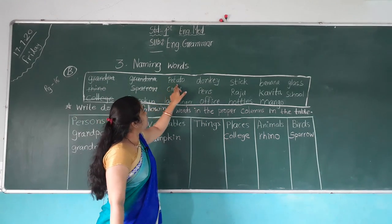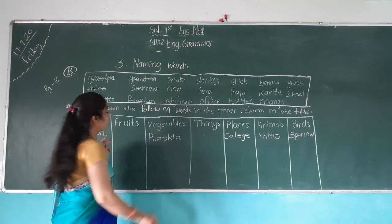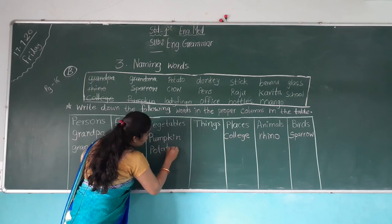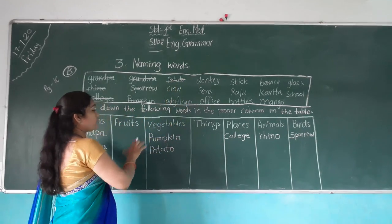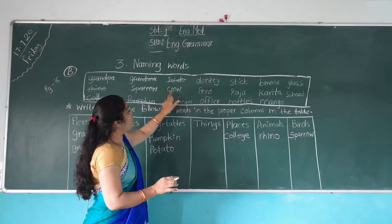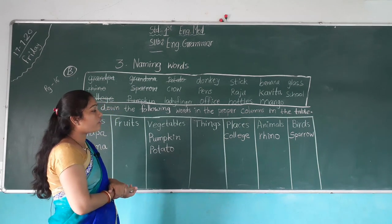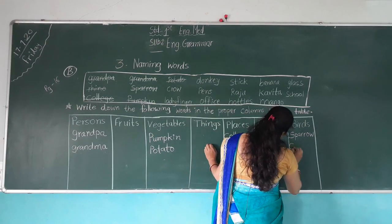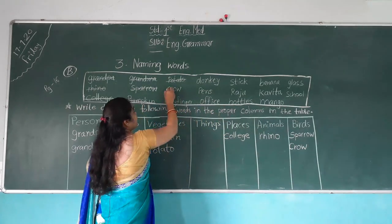P-O-T-A-T-O — Potato. Potato is the name of a vegetable, so we write it in the vegetables column. Next — C-R-O-W — Crow. Crow is a bird, so where do we write it? We write it in the birds column — C-R-O-W. Cut it.